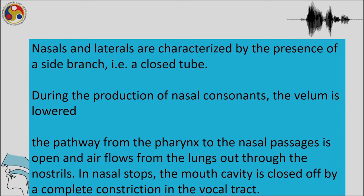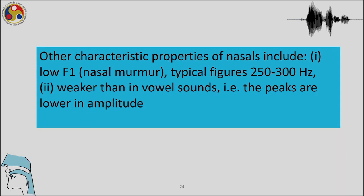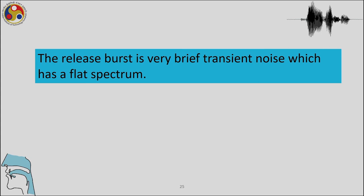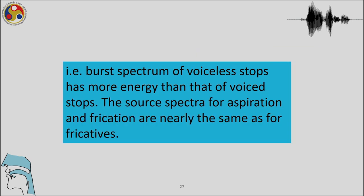During the production of nasal consonants the velum is lowered, the pathway from the pharynx to the nasal passages opens, and air flows from the lungs through the nostrils. In nasal stops the mouth cavity is closed off by complete constriction in the vocal tract. Recall the low F1 for nasals — around 200 to 250 Hz — and the peaks are weaker in amplitude than in vowels. The release burst is a very brief transient noise with a flat spectrum, and voiceless stops have more energy than voiced stops in the burst spectrum.